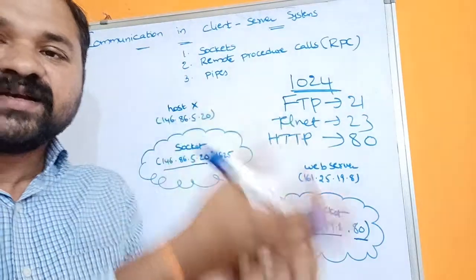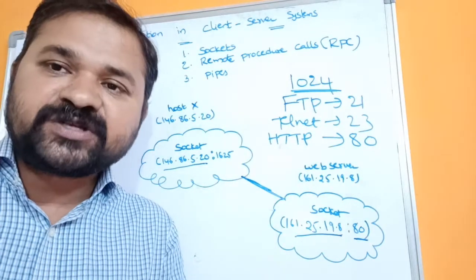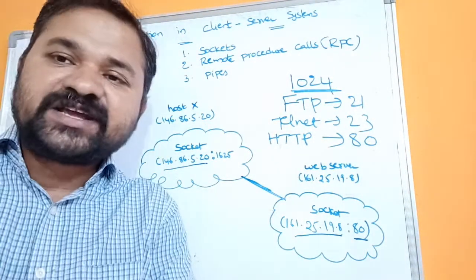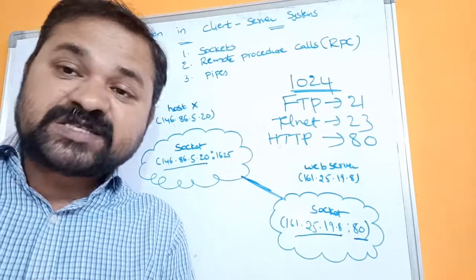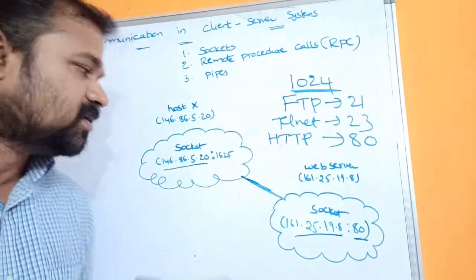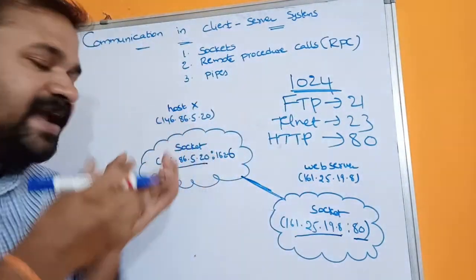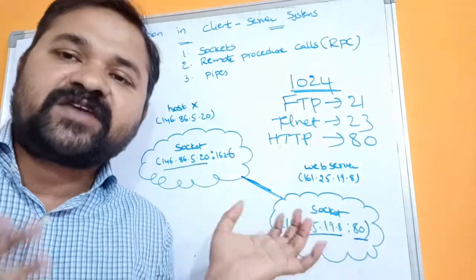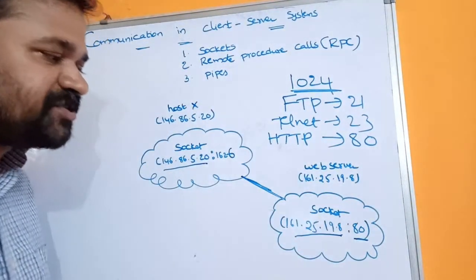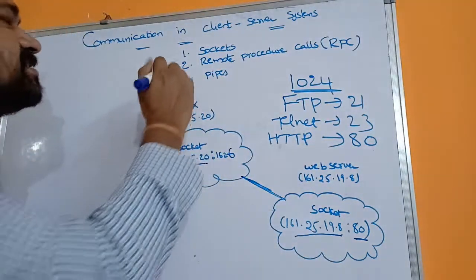After the connection is established, the client sends a request to the server. Based on the request, the server processes it and provides a response to the client. If the host generates one more request, a new process is created with a different port number — since port numbers must be unique within a system, a different port number greater than 1024 is assigned. So in a host, we can have several requests to the server, and at both the client and server machines, we establish sockets for communication.